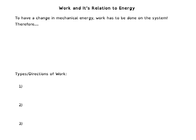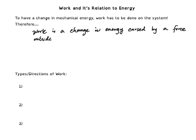To summarize what we saw: to have a change in mechanical energy, work has to be done on the system. Therefore, work is just a change in energy. Work is a change in energy caused by a force outside of the system. Going back to our last slide, the spring was no longer in the system, so the spring was supplying a force to the system to cause that change in energy — to give the system the energy we saw in that final snapshot. That's our definition for work: work is a change of energy.